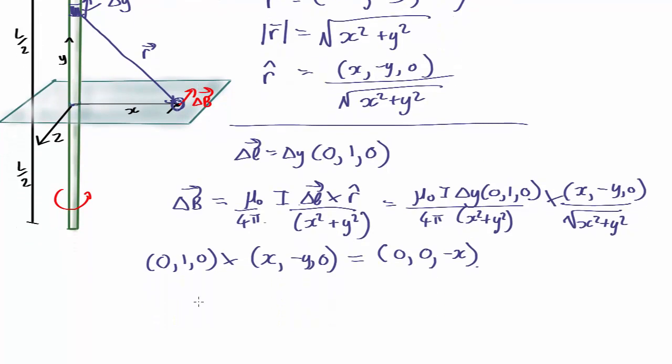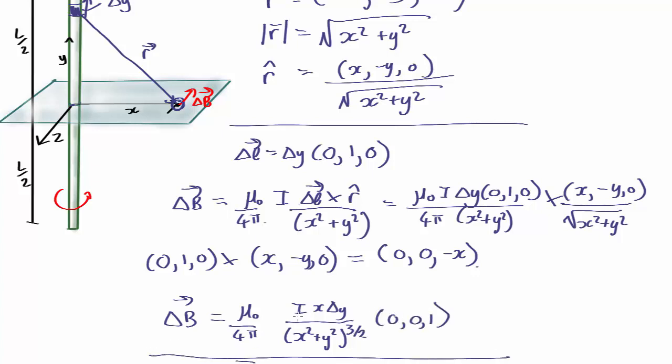So if we factor that all in, we find that the final result—right, so we have a constant, proportional to the current, proportional to x delta y over (x squared plus y squared) to the three halves, and it points in the z direction. And there's a minus sign in front there to make sure it points the correct way.